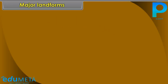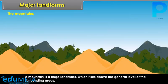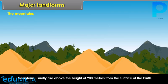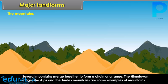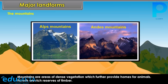The land mass has different types of landforms. These are generally grouped into mountains, plateaus, and plains. A mountain is a huge land mass which rises above the general level of the surrounding areas, usually above a height of 900 meters from the surface of the earth. Several mountains merge together to form a chain or a range. The Himalayan Range, the Alps, and the Andes Mountains are some examples.